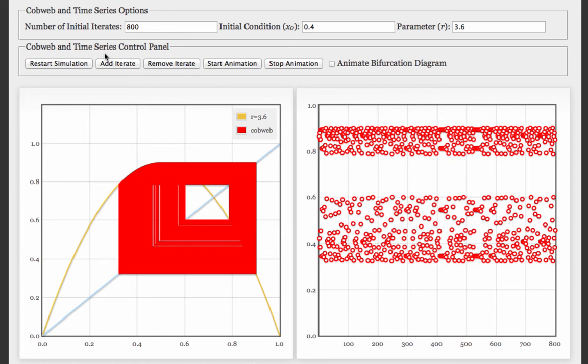Again, doesn't look like there's any convergence. As you do more and more iterates though, you start to see some patterns. Especially, for example, right here. Looks like something is repeating for a while. Maybe it's almost a periodic orbit, but then it's not.